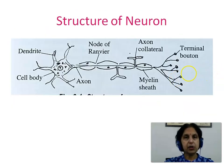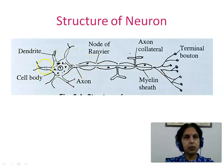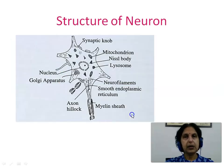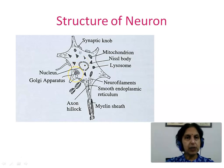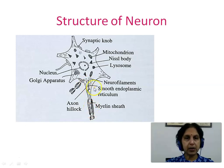This is a picture showing the structure of the neuron, where we can see the cell body or soma and the processes — the single axon and multiple dendrites. A magnified view of the soma shows it contains a vesicular nucleus, Golgi apparatus, mitochondria, lysosome, and Nissl bodies. Also seen here is the axon hillock, as well as some parts of the axon and dendrites.